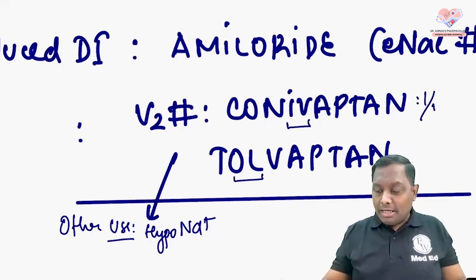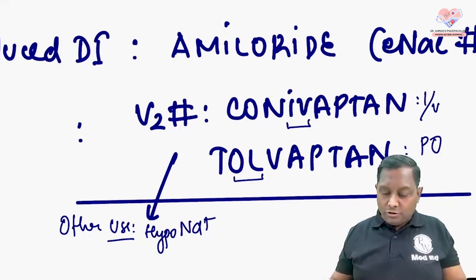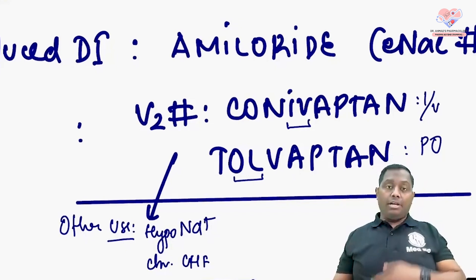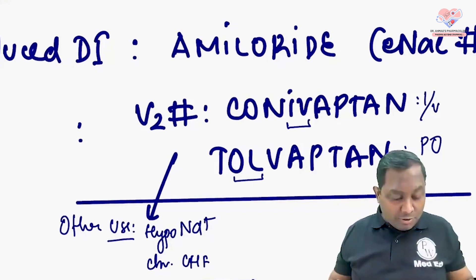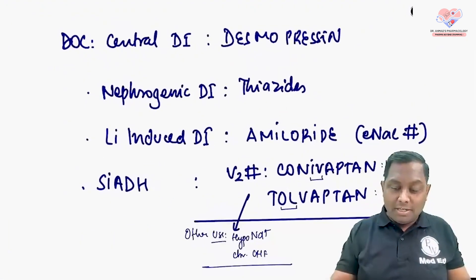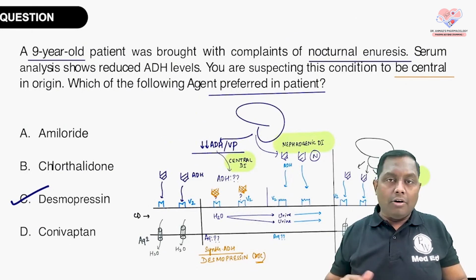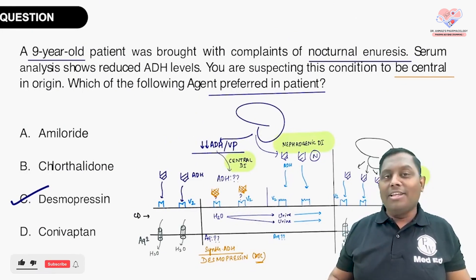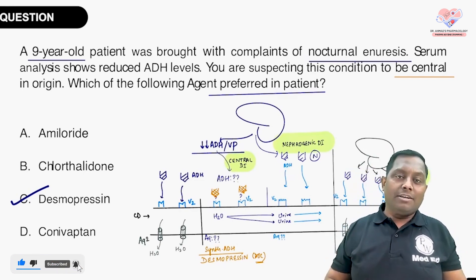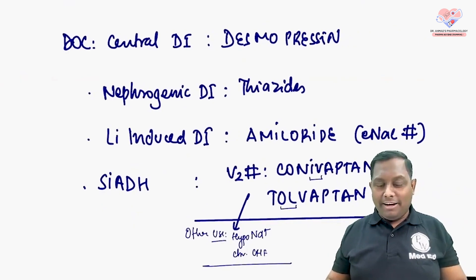Tolvaptan is the oral agent and conivaptan is the injectable (IV) agent. Both are used in hyponatremia management. Tolvaptan also has approval for chronic congestive heart failure. To summarize: chlorthalidone (thiazide) is the drug of choice for nephrogenic DI, amiloride for lithium-induced DI, and conivaptan for SIADH.